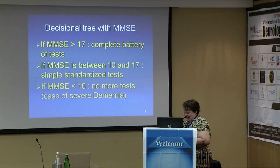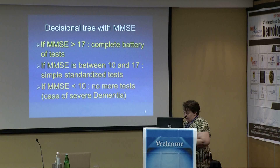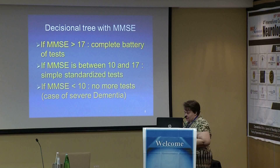For executive function, we use Trail-Making Test A and B. For visual constructive capacity, we use the clock-drawing test. For language, we use a French picture-naming test called GOAT and lexical evocation. For reasoning, we use the similarity subtest of the WAIS. After performing the battery of tests, we assess depression using the Geriatric Depression Scale, 15 items, called GDS.